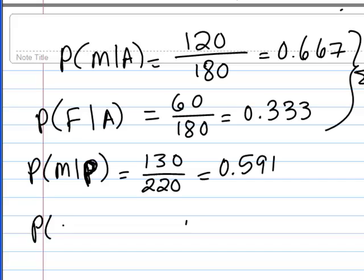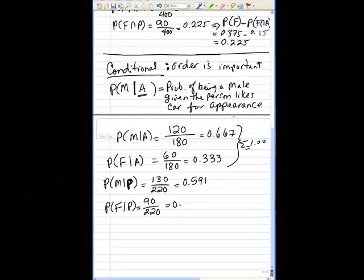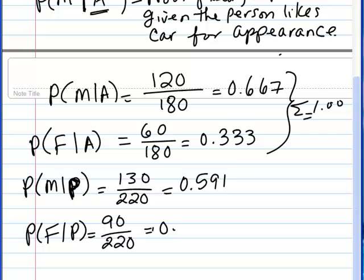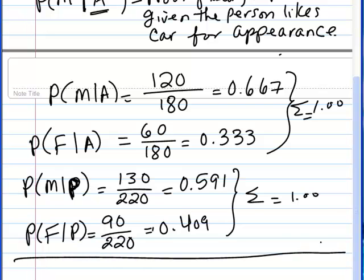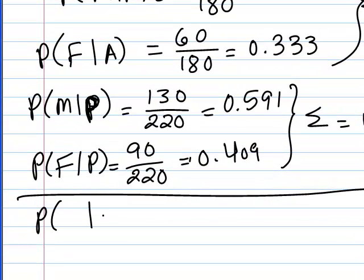And probability of female given performance is 90 divided by 220, which is 0.409. And of course these add up to 1. So far we've looked at the given event being the reason for purchase, either appearance or performance. We can also compute conditionals for the other event — given that you're a male, what is the probability that you buy a car because of its appearance?